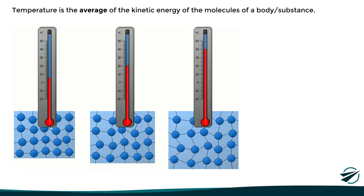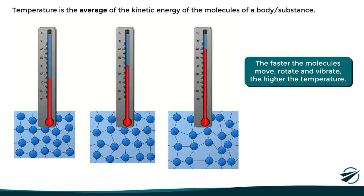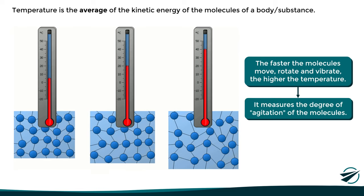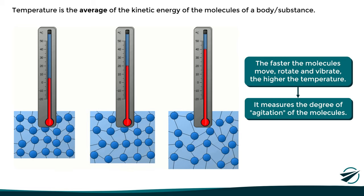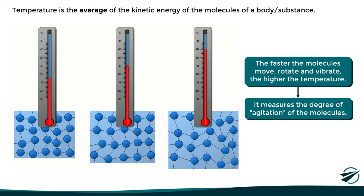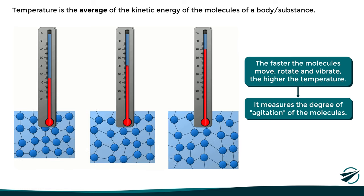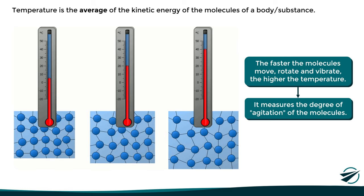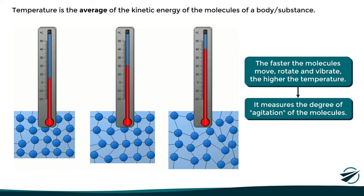In simple words, this means that the faster the molecules of a body move, the higher its internal energy, and thus the higher its temperature. We can also say that temperature measures the degree of agitation of the molecules of a body or substance. It is important to clarify that we say temperature is the average kinetic energy, since within the same substance not all molecules move in the same way — some may move faster than others. So, if we analyze a single molecule, the concept of temperature makes no sense; it only makes sense if we analyze a large group of molecules at the macroscopic level.